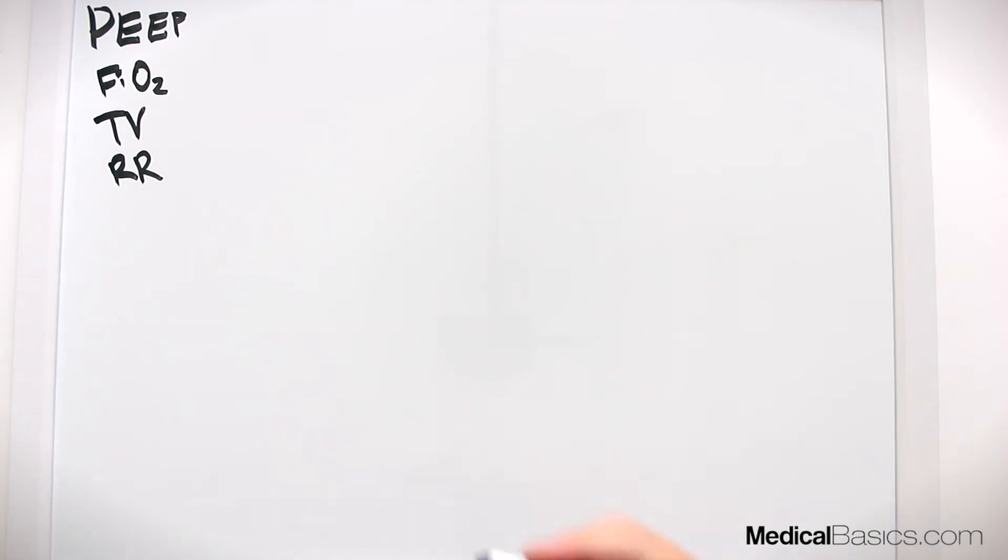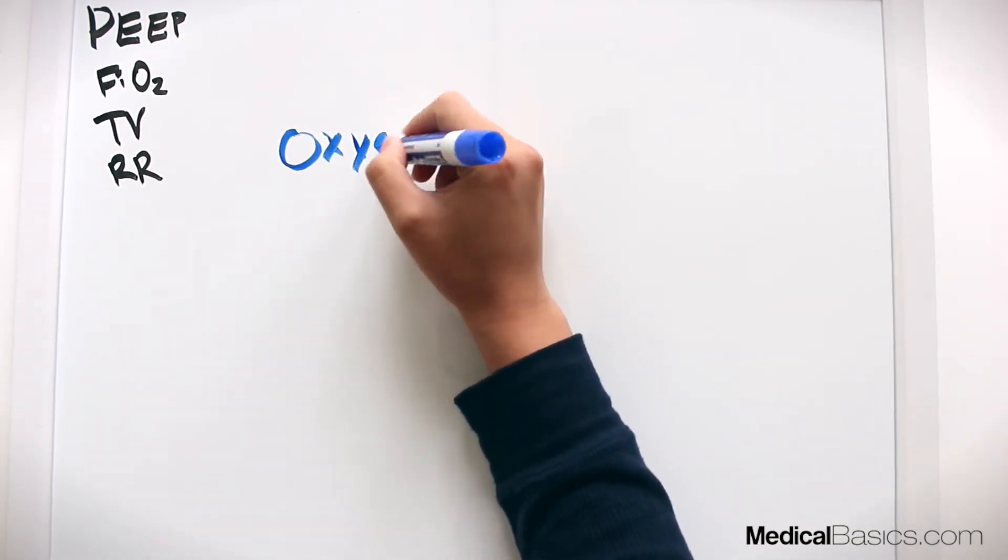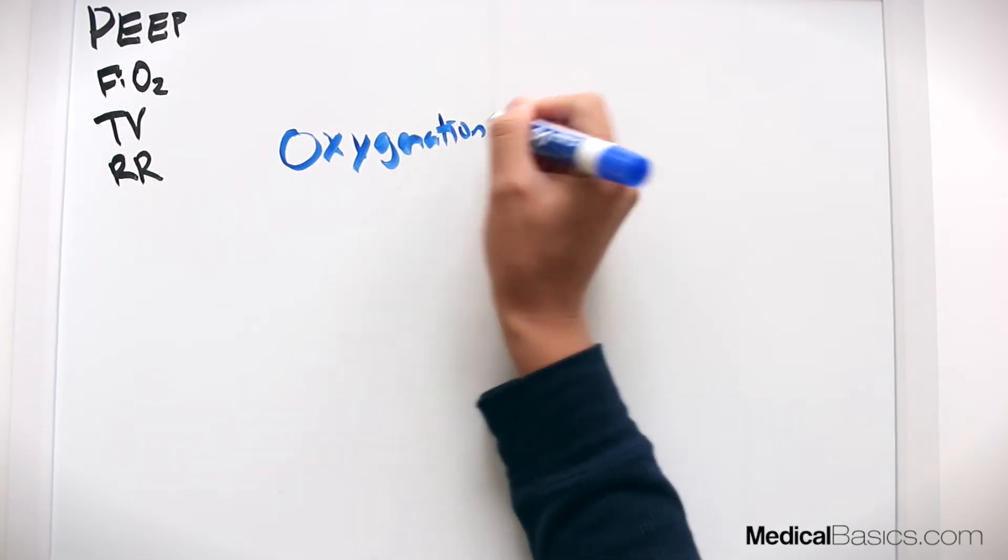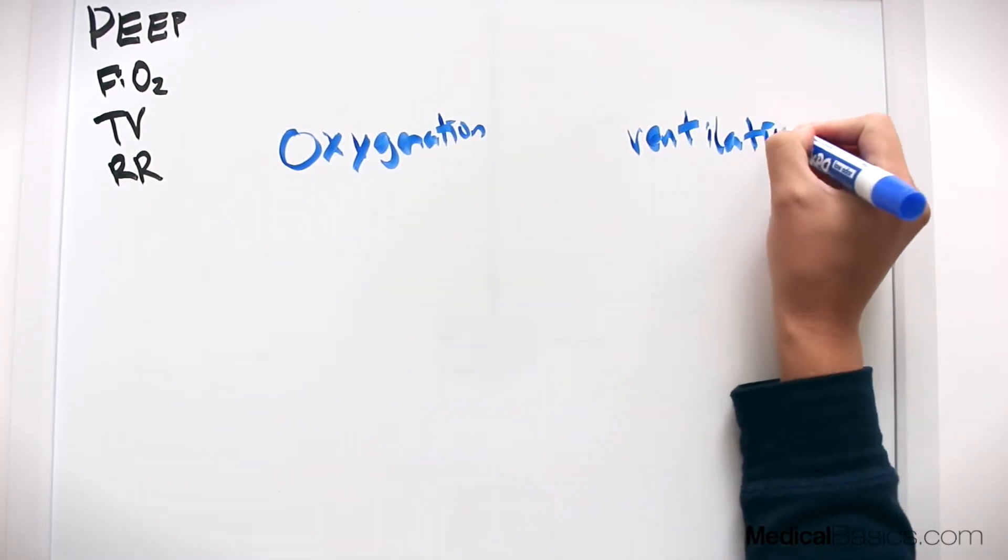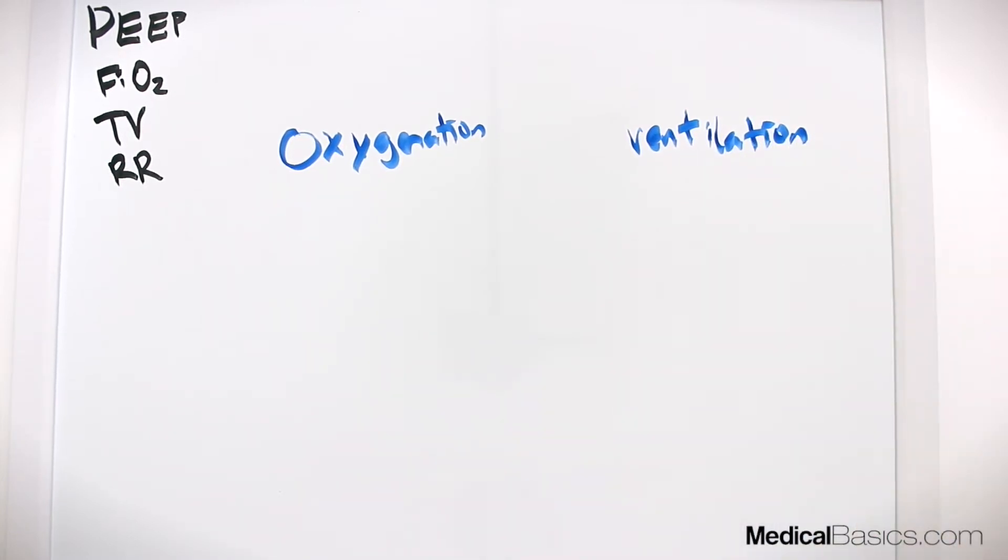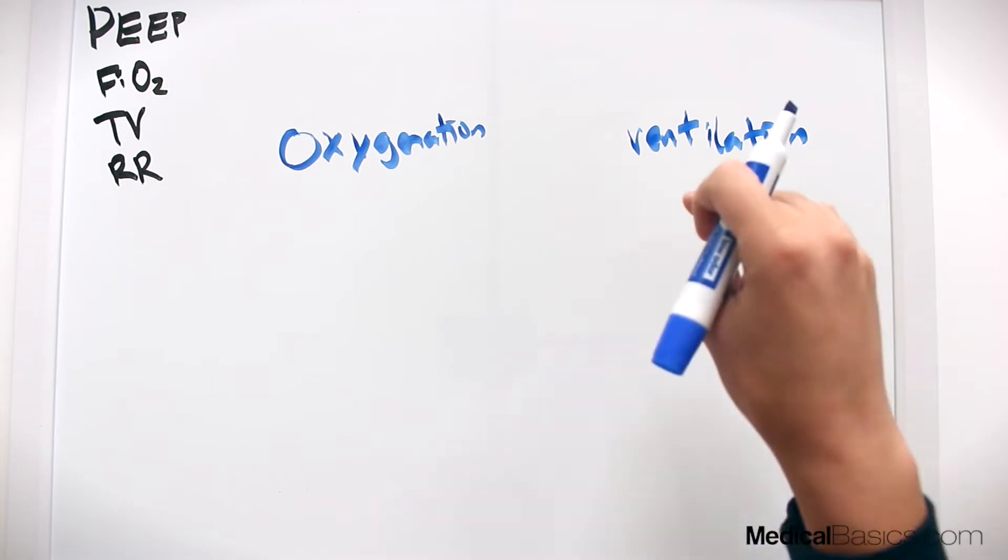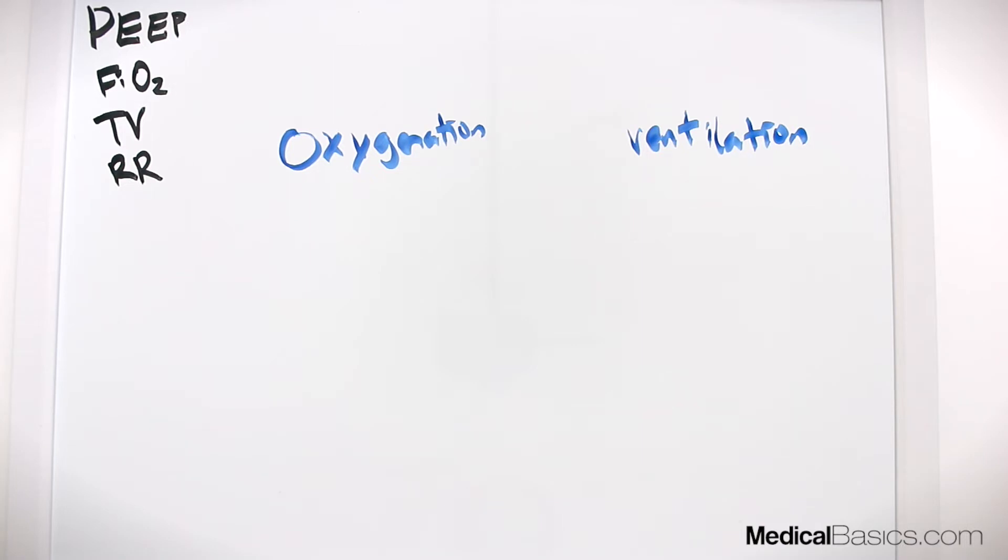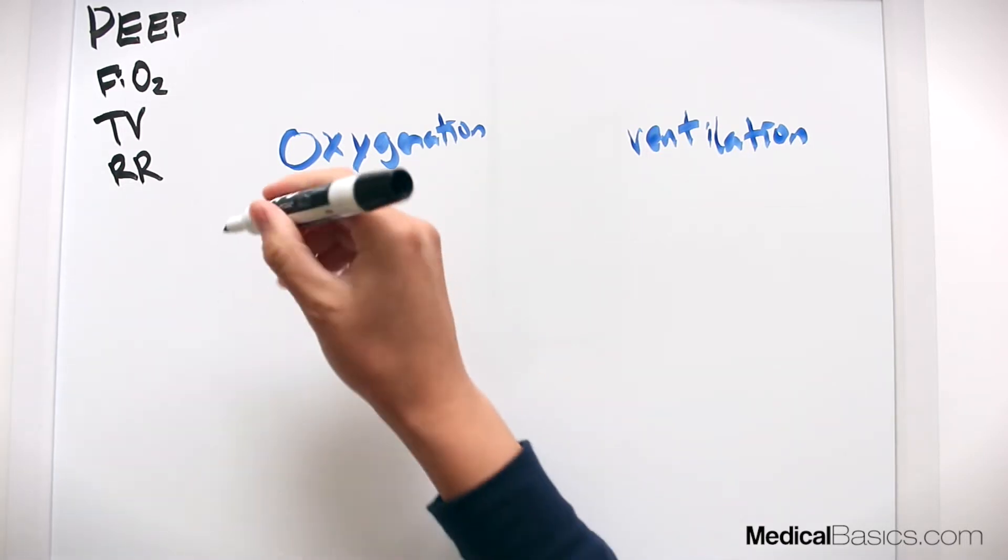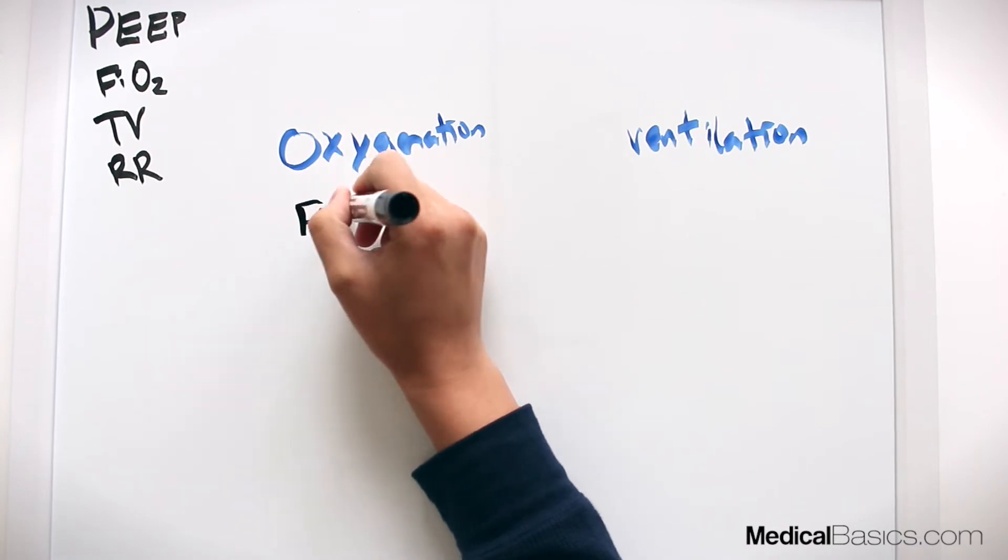Now that we have that under control, what we need to figure out is which ones are going to affect oxygenation and which ones are going to affect ventilation. That's a very important concept that was very difficult to understand or remember which one was which, but it's actually much easier than you think if you can break it down like this. The most obvious ones in terms of oxygenation and ventilation are going to be - well, oxygenation, that's going to be FiO2, right?